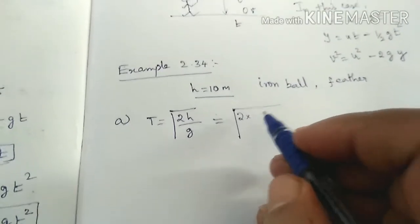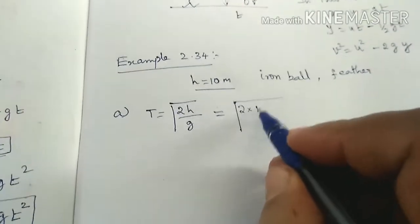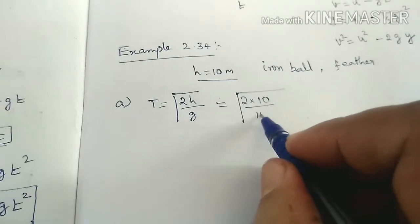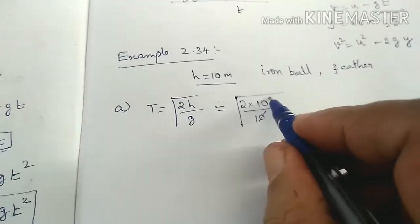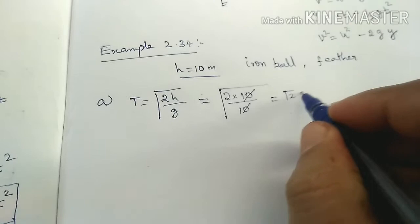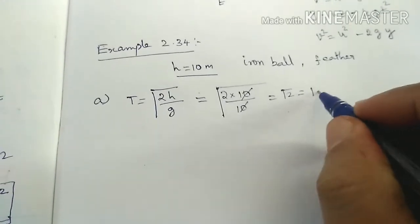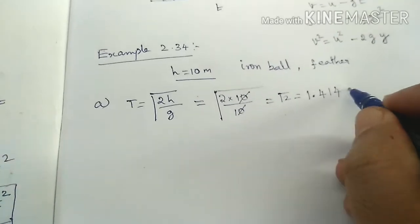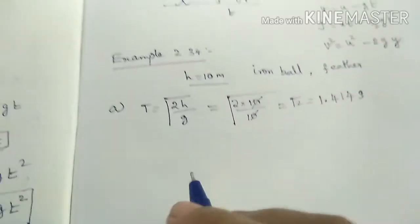Here H is 10, G is given in problem, take 10. So 10 cancel and root 2. What is the value of root 2? 1.414 second.